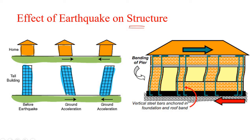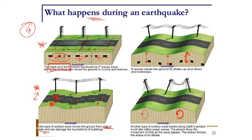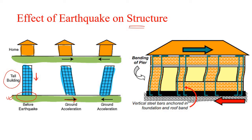Consider this particular tall building. Before the earthquake the ground is at rest and the whole structure is aligned vertically. But once the ground starts to accelerate horizontally during the earthquake, the lower part of the building simultaneously accelerates along with the ground because it is attached to the ground, while the top part is far away from the ground.